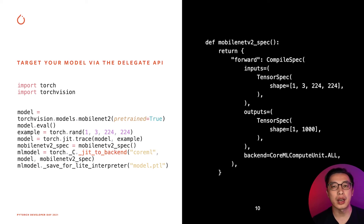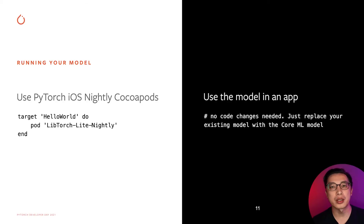We can also specify the hardware you want to target. By default, the model will run on CPU. In this example, we use 'all' to allow Core ML to select the best processing unit to use, which includes the Neural Engine if it's available. When it comes to runtime inference, we provide nightly CocoaPods for you to try out. You can use the new model directly within your app — there are no code changes needed. Just switch your existing model with the new model.